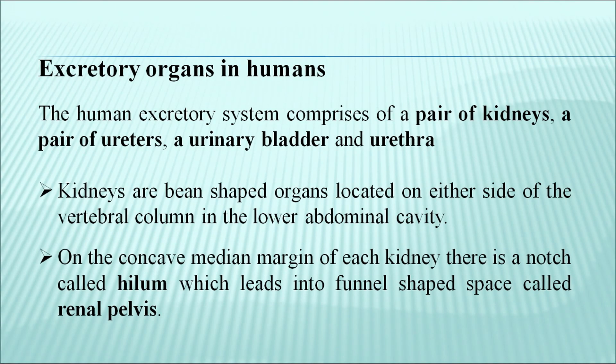The excretory organs in humans include mainly a pair of kidneys, a pair of ureters, a urinary bladder and urethra. Kidneys are basically bean-shaped organs located on either side of the vertebral column in the lower abdominal cavity. On the concave median margin of each kidney, there is a notch called the hilum, which leads into a funnel-shaped space called the renal pelvis.